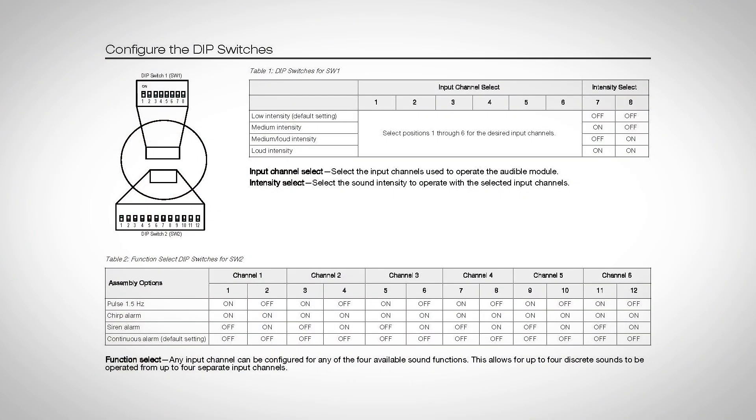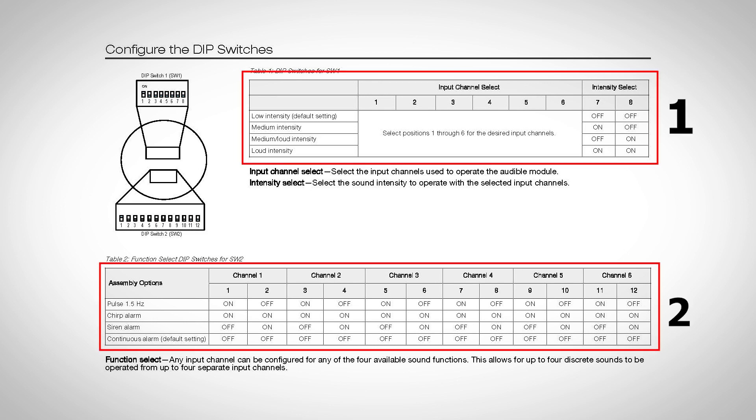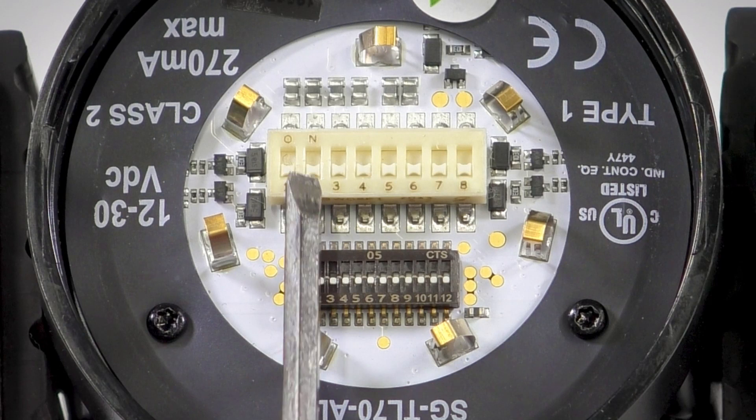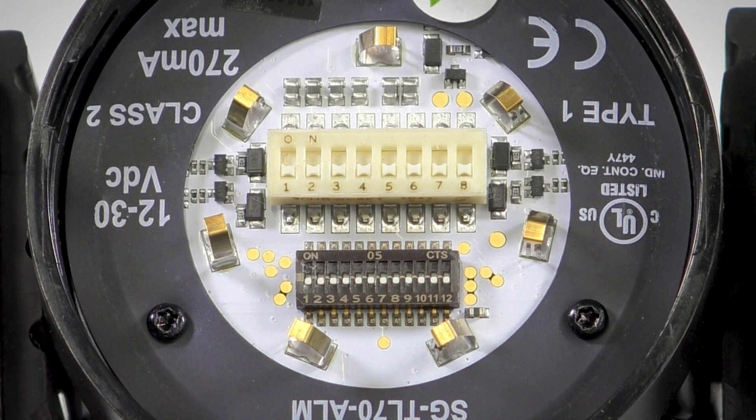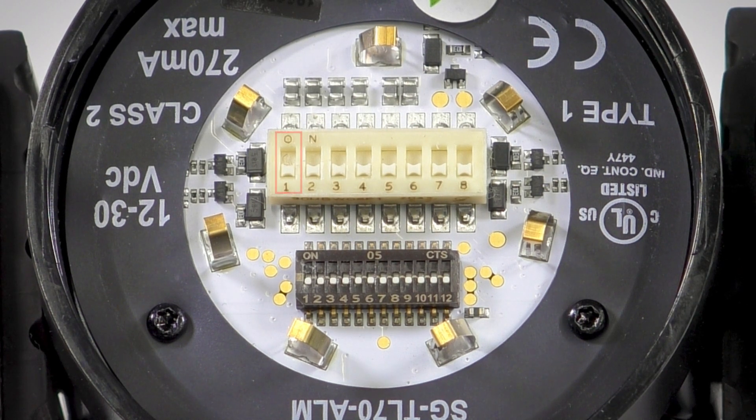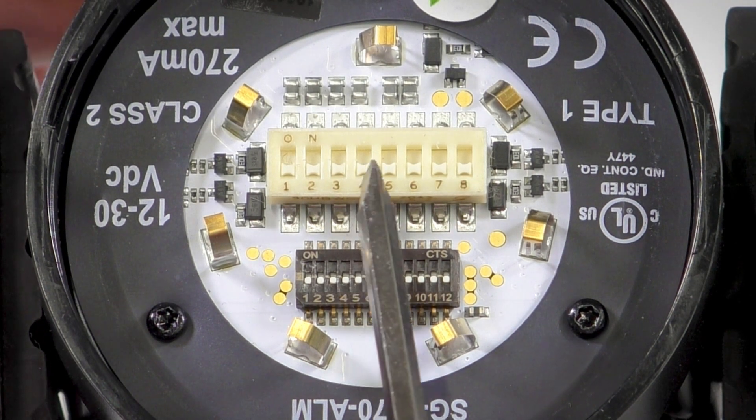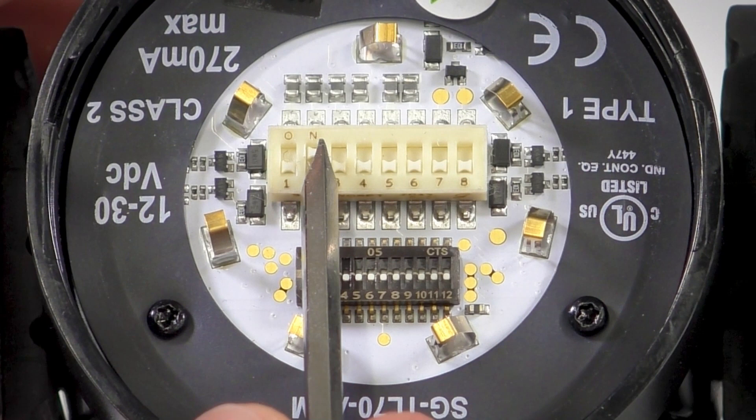Our multi-tone audible alarm segment has two banks of dip switches. The upper white bank controls our inputs and intensity. In our case, we'll attach to an indicator segment already configured as input one, and to have three tones available, we're going to turn on switches two, three, and four.